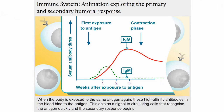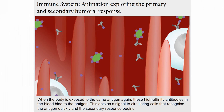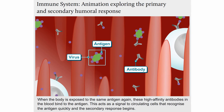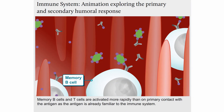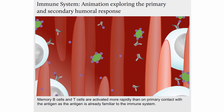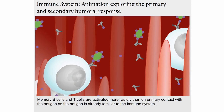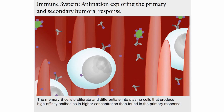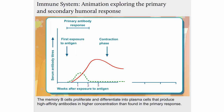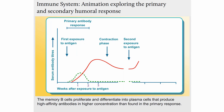When the body is exposed to the same antigen again, these high affinity antibodies in the blood bind to the antigen. This acts as a signal to circulating cells that recognise the antigen quickly and the secondary response begins. Memory B-cells and T-cells are activated more rapidly than on primary contact with the antigen, as the antigen is already familiar to the immune system. The memory B-cells proliferate and differentiate into plasma cells that produce high affinity antibodies in higher concentration than found in the primary response.